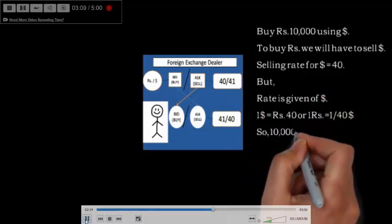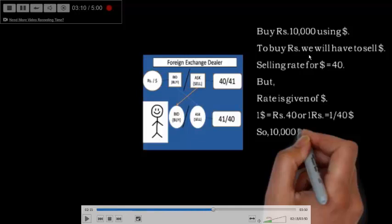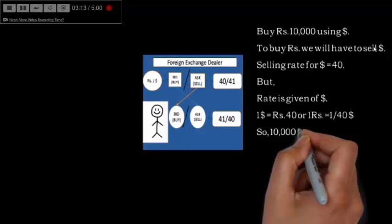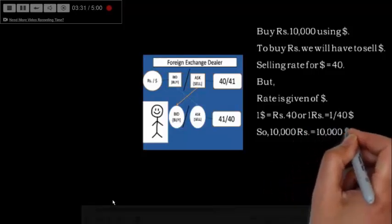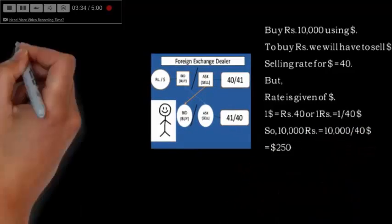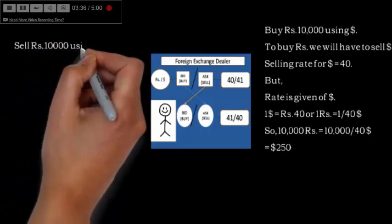To buy rupees, we will have to sell dollar, because if I want rupees then I will have to give one currency, and in this case it will be dollar. The selling rate for 1 dollar is 40, so the selling rate of 1 rupee equals 1 by 40. I need 10,000 rupees, so by simple multiplication, 10,000 divided by 40 equals dollar 250.